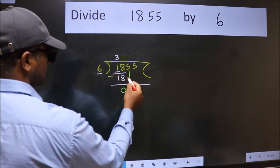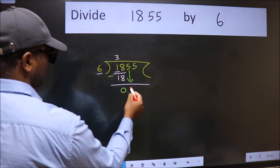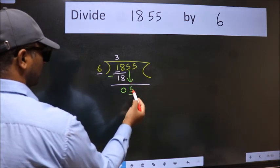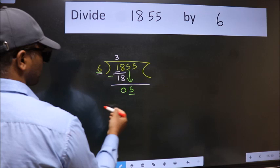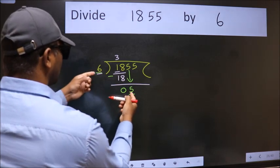After this, bring down the beside number. So 5 down. Now here we have 5 and here 6. 5 is smaller than 6.